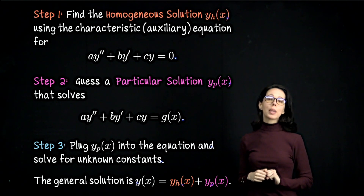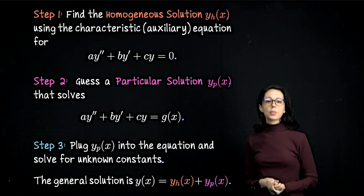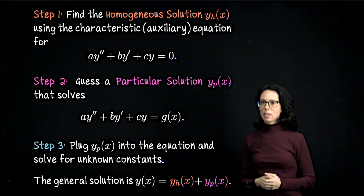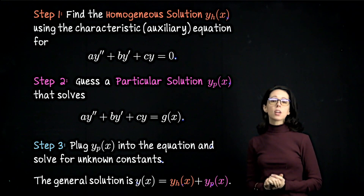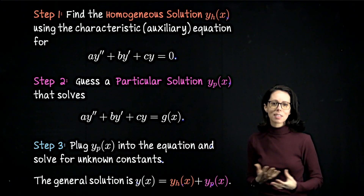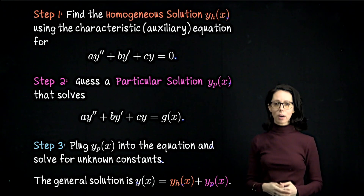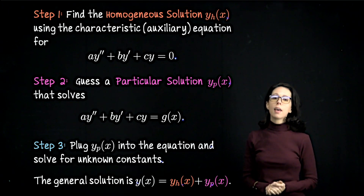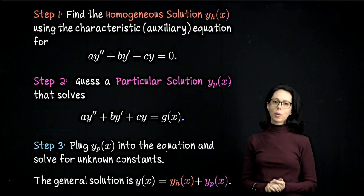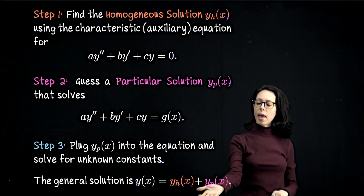In step two, we guess a solution to the equation. You take the forcing function g of x and guess a generalized version of it. The guess you make to get the particular solution y sub p is based on the form of g of x — it will basically always look like g of x itself. You plug this proposed solution into the differential equation and see if you can make it work. If you can, then you have y sub p, the particular solution. The overall general solution to the non-homogeneous problem is the sum of y sub h and y sub p.